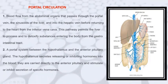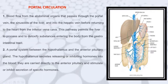Portal circulation refers to the blood flow from the abdominal organs that passes through the portal vein. Blood from the digestive system enters the portal vein and travels to the liver for the detoxification process, where toxic substances from the gut are removed. The blood then flows through the sinusoids of the liver and into the hepatic vein before returning to the heart via the inferior vena cava.